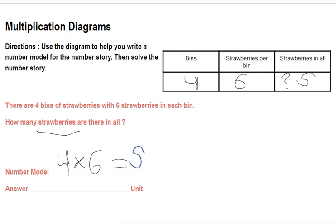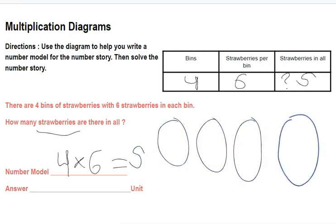Now, some of you may know this off the top of your head. But, if you don't, remember there are many different ways that we can figure out a multiplication problem. Right now, I'm going to draw four bins. And then, I'm going to put six tallies in each.